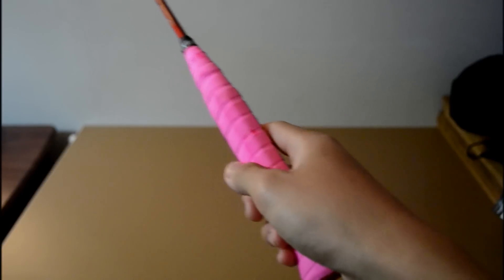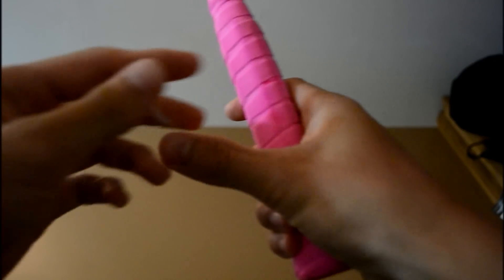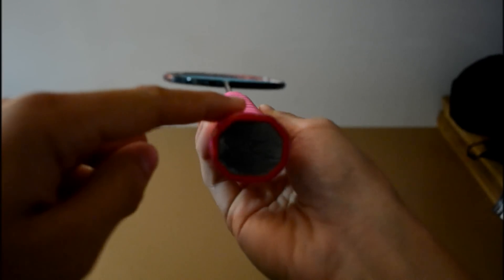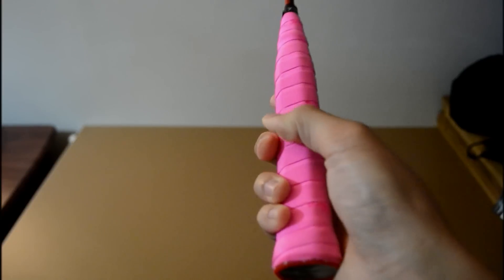Now, in more detail, this part of your thumb, the flat side, is going to go on this fat flat side of the racket, okay? It's going to rest right here.